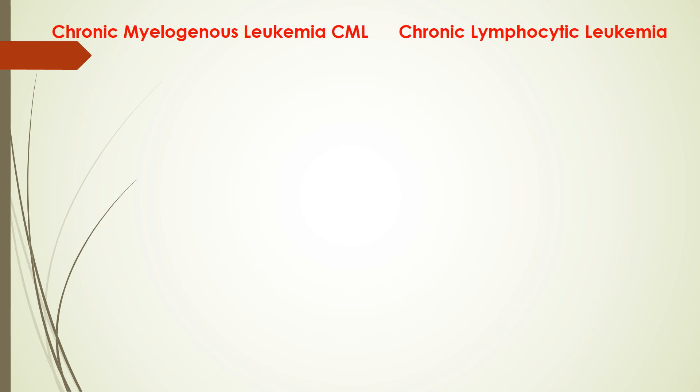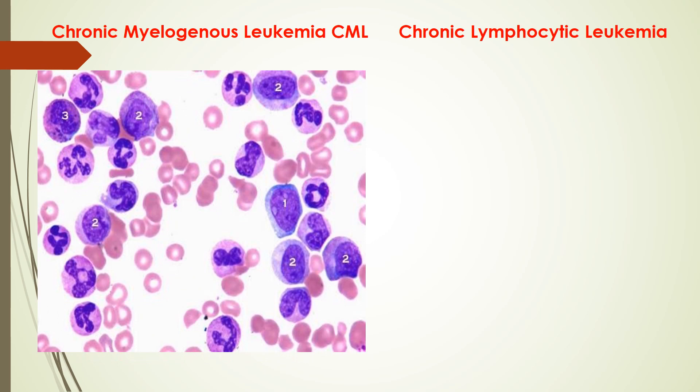This is a picture of CML. The blast cells are very few; the majority are mature cells. The arrow cursor shows a mature cell, a myelocyte, a promyelocyte (very few), and a metamyelocyte. So there are more mature cells and fewer immature or blast cells in CML peripheral smear.